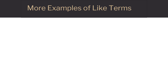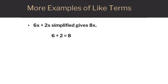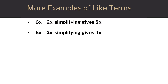Here are some more examples. 6x plus 2x — we would combine 6 and 2, so this simplifies to 8x. If we're subtracting, 6x minus 2x: 6 minus 2 is 4, so we get 4x.